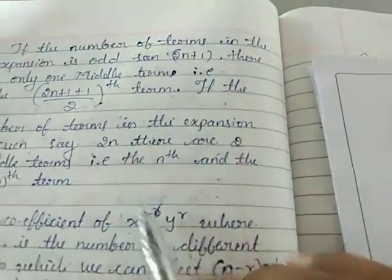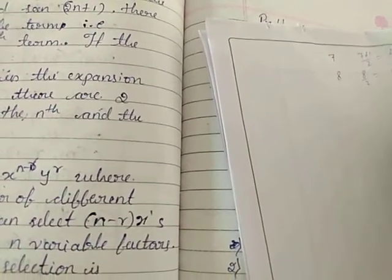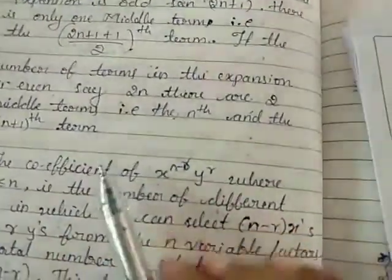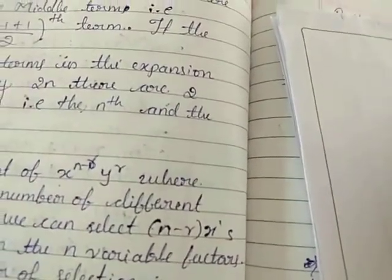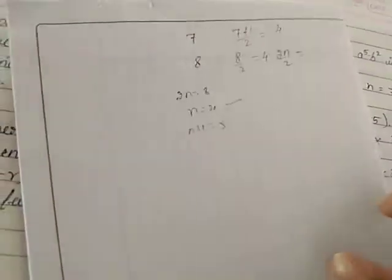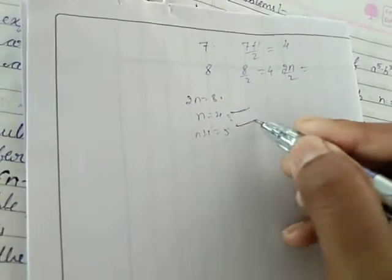If the number of terms in the expansion is even, for example 2n = 8, then n = 4, and there are two middle terms. The middle terms are at positions 2n/2 = 4 and n+1 = 5. So the 4th and 5th terms are the middle terms of the expansion.